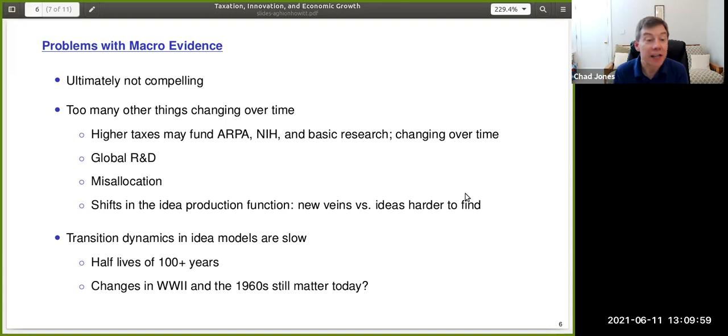Basic research has been changing over time. R&D is a global process. It's not just R&D in the United States that matters, but R&D done in Europe and Japan and increasingly in China and other places. Misallocation is changing productivity as well in the background. And finally, idea production functions may shift in interesting ways over time. General purpose technologies like electricity or semiconductors, or maybe now CRISPR could open up new veins for research and lead to rapid productivity growth in some areas. On the other hand, this may all occur against a backdrop where ideas are getting harder to find. So many things are changing over time that I think simple macro level evidence ultimately is not going to be very compelling.